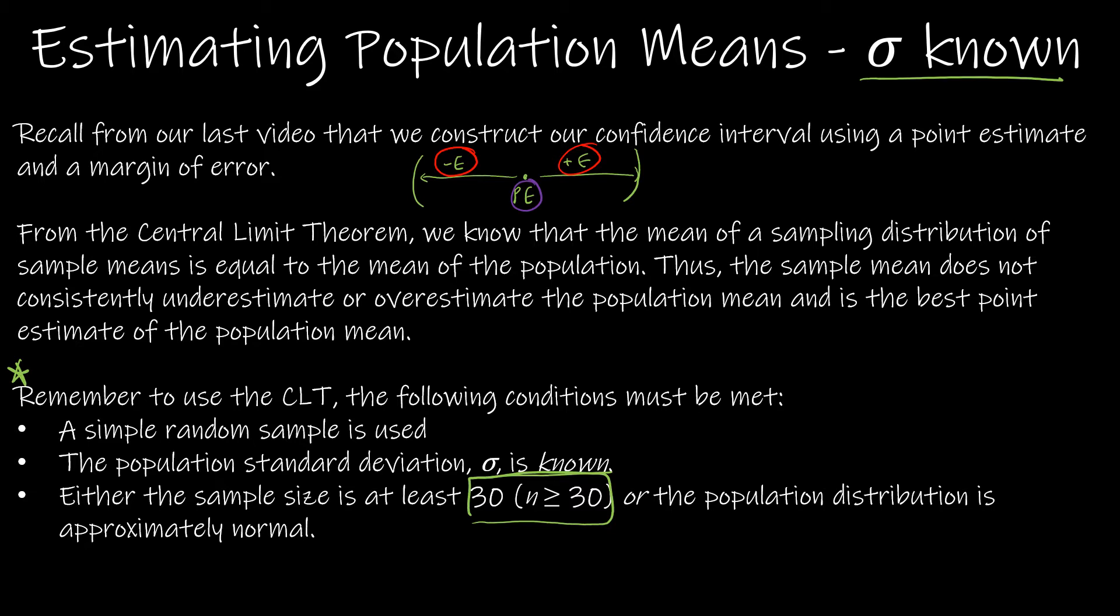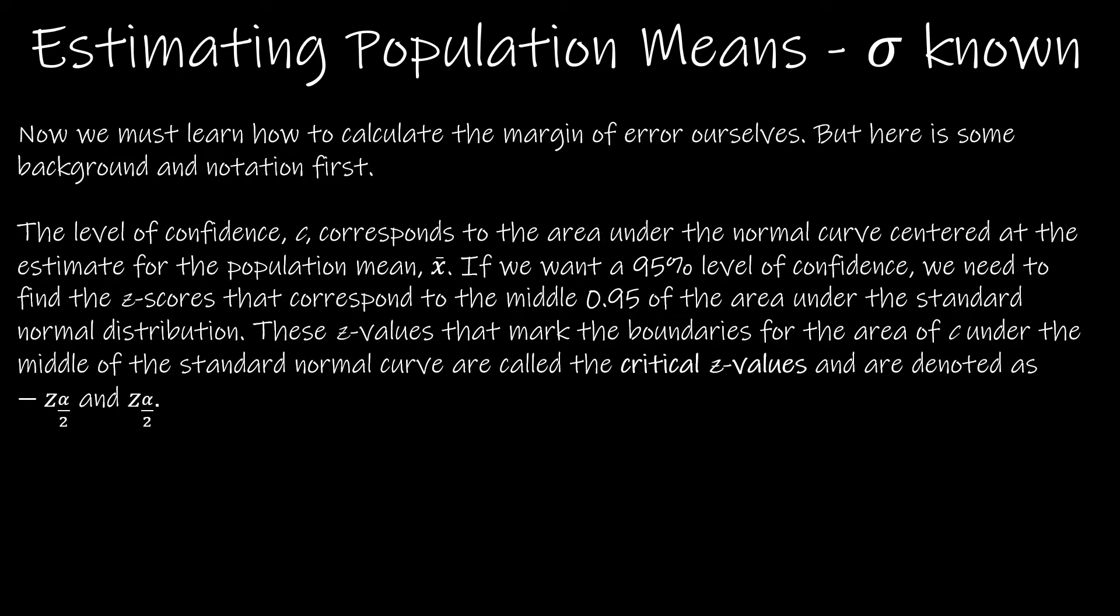If you recall from when we learned in our last chapter, when n was equal to 30, that sampling mean was very normal, and that's why that's that threshold. So now that we know basically what the restrictions are, we need to learn how to calculate the margin of error ourselves. But first, I just want to go through a little bit of background and notation.